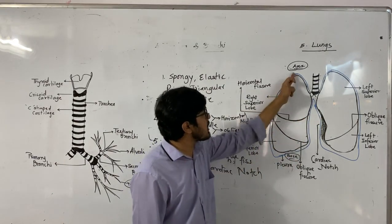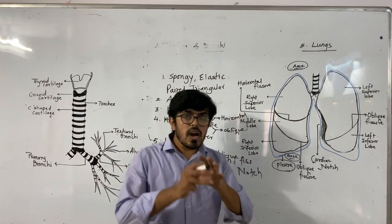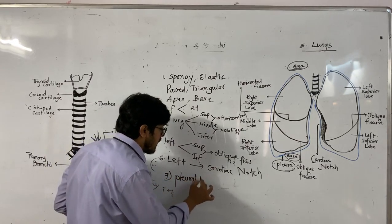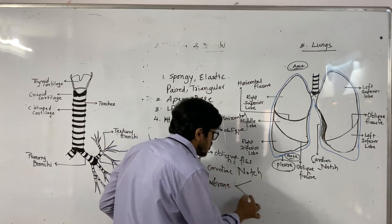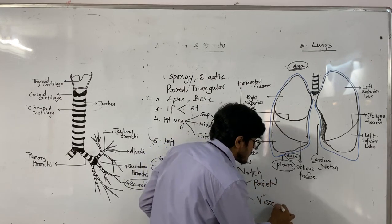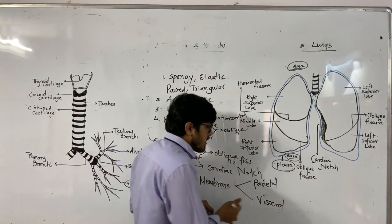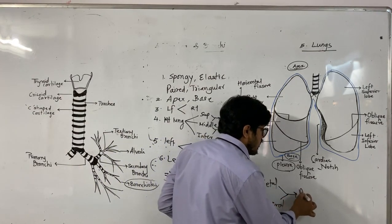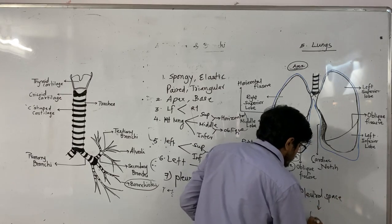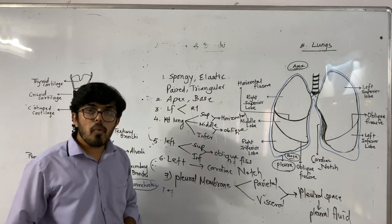Both lungs are protected by a double-layered membrane called the pleural membrane. The outer layer is called the parietal layer and the inner layer is called the visceral layer. The space between these two membranes is called the pleural space, which is filled with pleural fluid.